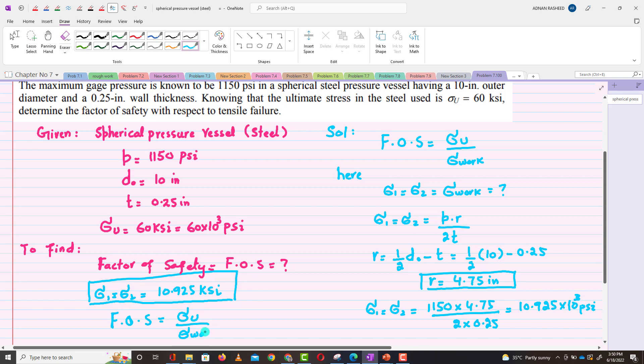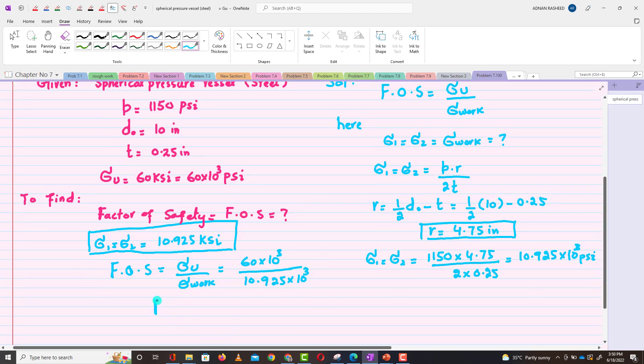So σ ultimate is equal to 60 ksi, so 60 × 10³ divided by working stress, which is 10.925 ksi. If you calculate it, you will get the factor of safety equal to 5.49.